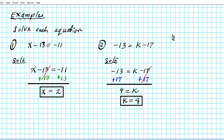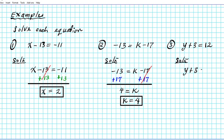Now let's look at question number 3. What if we have y plus 3 equals 12? We want to get y by itself — find the value of y that satisfies this equation. The term connected to y is plus 3, connected by addition. To undo that, we use the inverse operation: the inverse of addition is subtraction, so we subtract 3 from both sides of the equation.